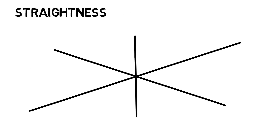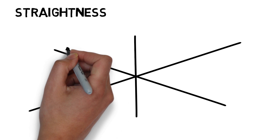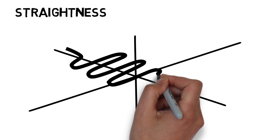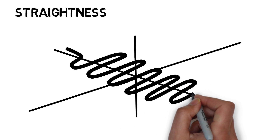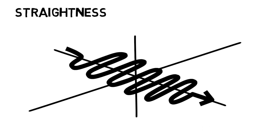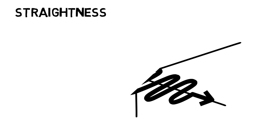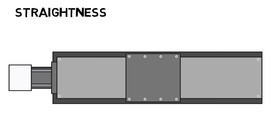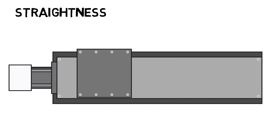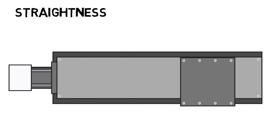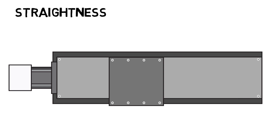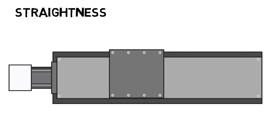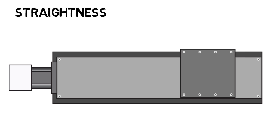Straightness is typically defined as a deviation from the true line of travel perpendicular to the direction of travel in the horizontal plane. If you are looking down on the stage from above and parallel to the direction of travel, this appears as deviation to the left and right as the stage moves through its travel.